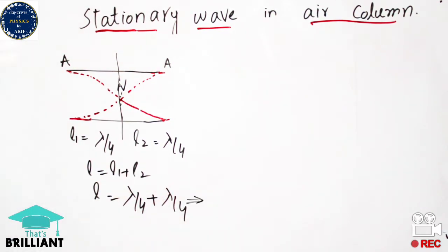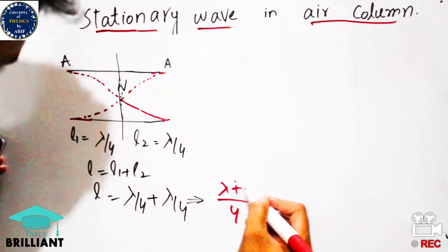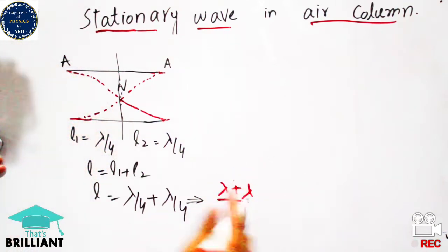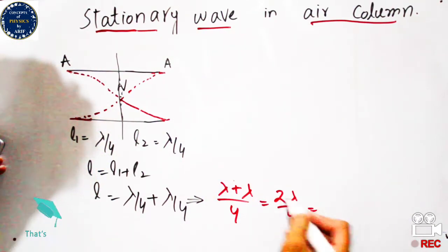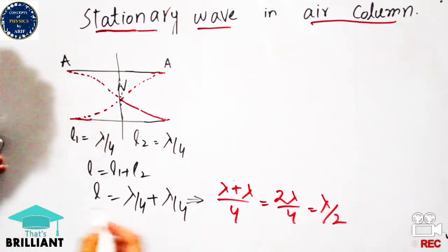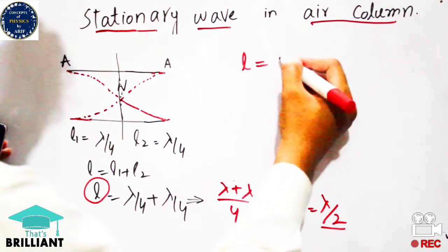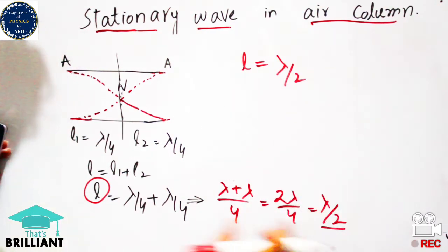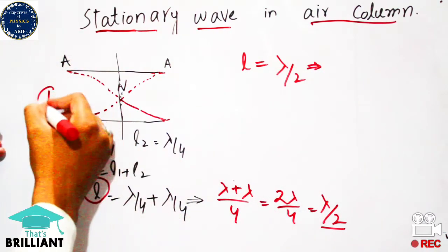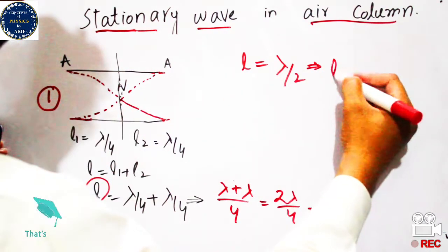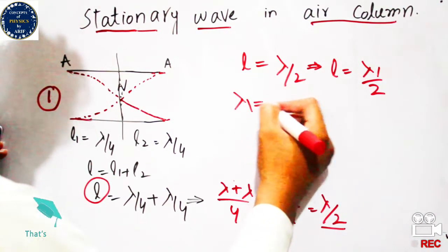If we calculate the total length of the wave produced: lambda/4 plus lambda/4, taking LCM of four, gives two lambda over four, which equals lambda by two. So the length of the pipe is equal to lambda by two — meaning half of the wavelength is produced in the pipe for mode one. Therefore, L is equal to lambda-one over two according to the formula.